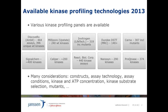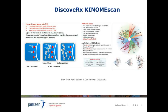We selected the DiscoverX KinomeScan platform, which has broad coverage including mutants. KinomeScan is a competitive binding assay which allows the determination of KDs after Cheng-Prusoff correction. The assay uses affinity beads to immobilize DNA-tagged kinases, which are displaced by the test compound in a dose-dependent manner. The kinase concentration is then quantified using a QPCR reaction. The assay allows some multiplexing and is available for more than 400 wild-type kinases and mutants.